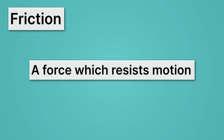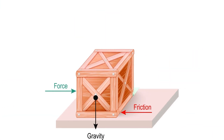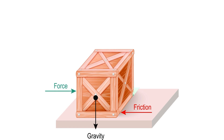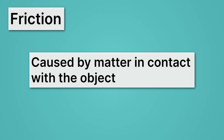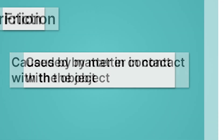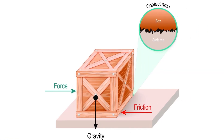First, let's remind ourselves of what friction is in general. It's a force which resists motion. Take this box — it has a green force acting on it, something pushing it. And that would cause the box to move, except there's a friction force shown by the red arrow pushing against it. Friction is caused by matter in contact with the object. If we zoom in on the contact area between the box and the surface, we see all these jagged edges. That's what gives rise to friction. Combined with gravity, when gravity presses those jagged surfaces into each other, it creates a resistive force that resists motion.